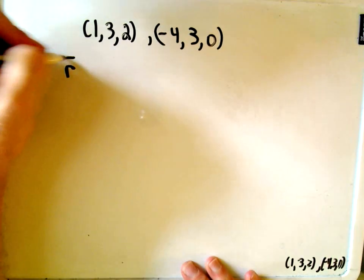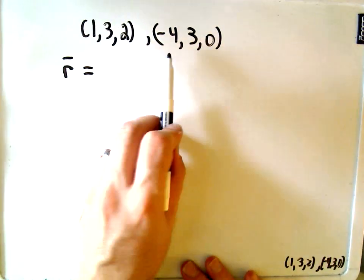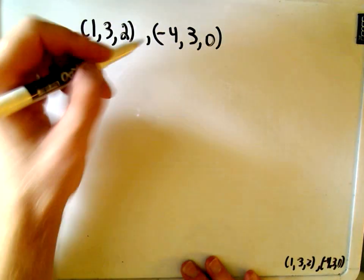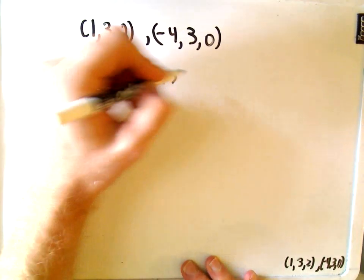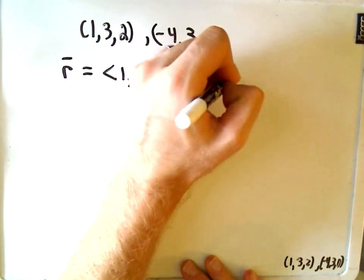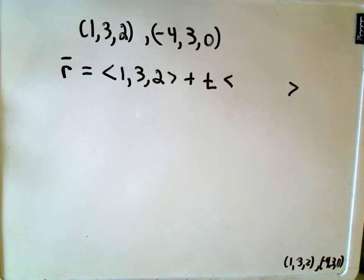Okay, so already when I fill in my vector equation I can use either one of these points. So I'll just use the (1, 3, 2), and then we need our plus t times—well, now we need a vector that's parallel.